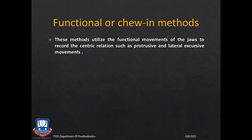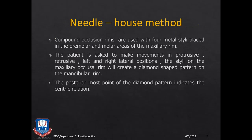The functional methods utilize the functional movements of the jaws — such as protrusive and laterotrusive movements — to record centric relationship. The first is the needle-house method. In this method, compound occlusal rims are used with four metal styli or studs placed in the premolar and molar area of the maxillary occlusal rims. The patient is then asked to make movements in protrusive, retrusive, and laterotrusive directions, and these styli make grooves or notches in the mandibular rim which are diamond-shaped.